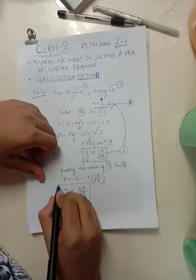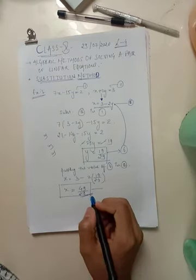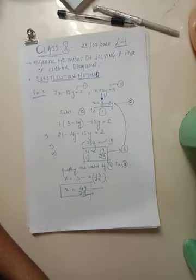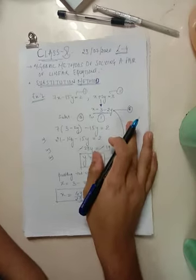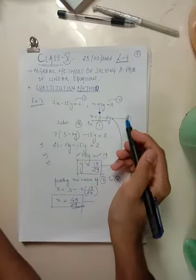And solving further we get x equals 49 upon 29. So this is how we obtain the solution for a pair of linear equations using substitution method. I hope it would be very clear because it is a very simple method.